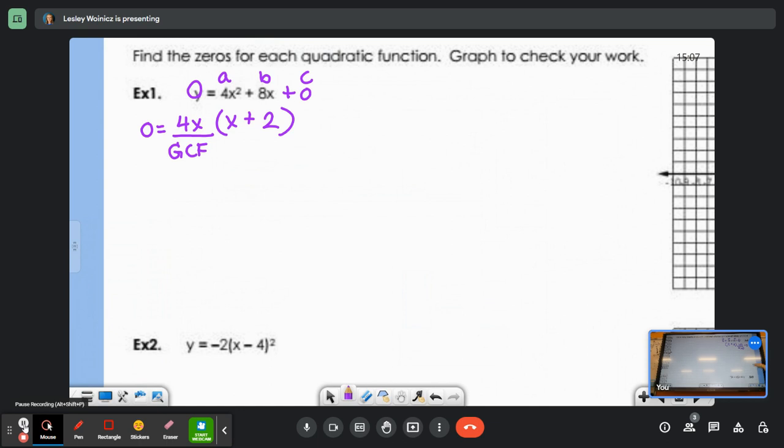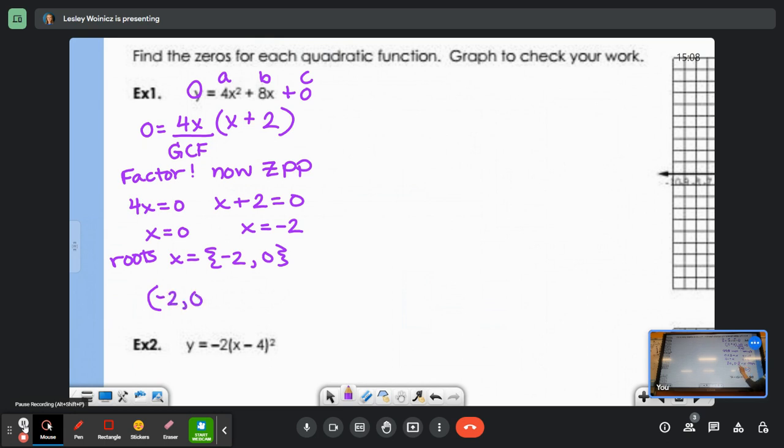4X squared divided by 4X leaves us with an X plus 2. Now that we've done factoring, now we're ready for the ZPP. So, we do 4X equals 0, and X plus 2 equals 0. Zero and negative 2. Put them in curly brackets. The last thing I want you to write here is a prediction for our X-intercepts. So, the X-intercepts are going to be points whose X-coordinates are our roots. That would be a negative 2 with a 0 for the Y, and a 0 with a 0 for the Y.